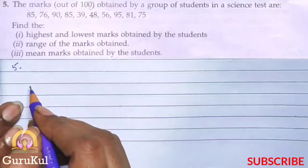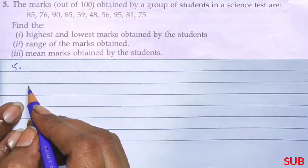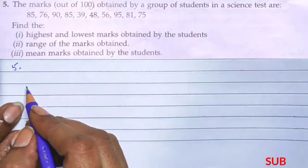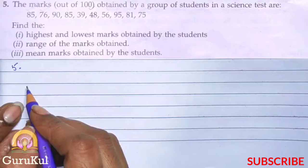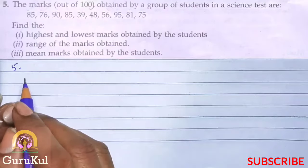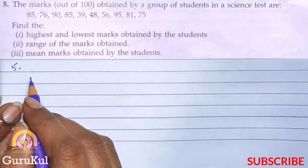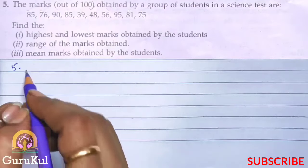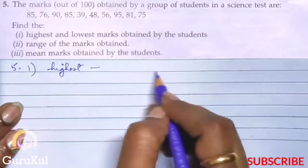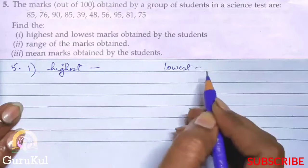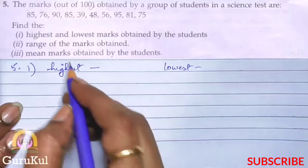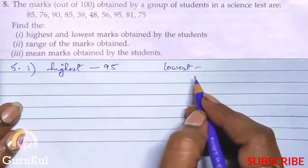Question number 5. The marks out of 100 obtained by a group of students in a science test are: 85, 76, 90, 85, 39, 48, 56, 95, 81 and 75. Now we have to find the highest and lowest marks obtained by the students. So first part: highest and lowest. So here our highest is 95 and lowest is 39.